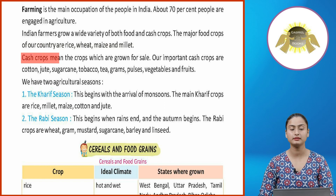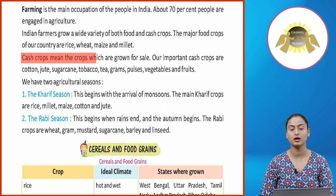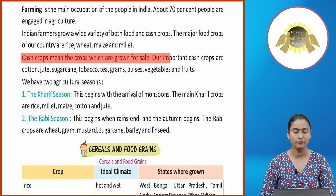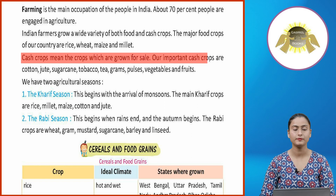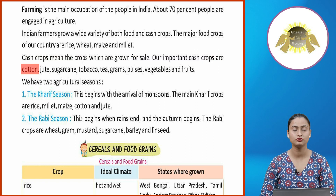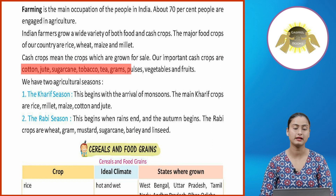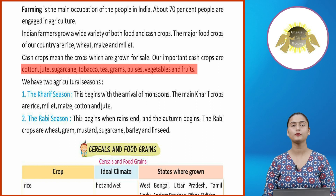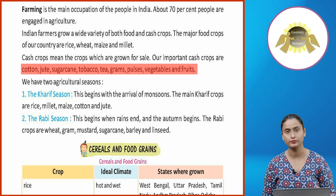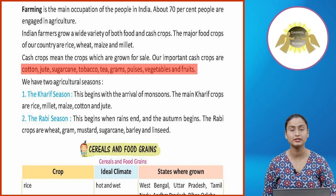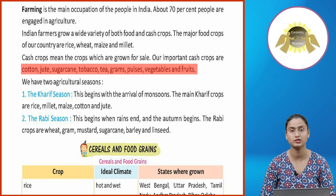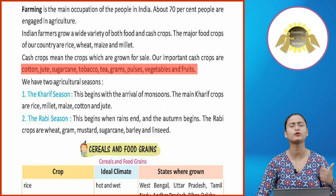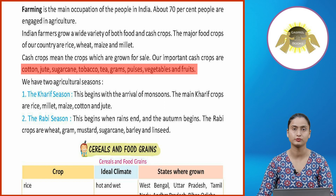Cash crops are the crops which are grown for sale. Our important cash crops are cotton, jute, sugarcane, tobacco, tea, grams, pulses, vegetables and fruits — like tea, coffee, or different types of cash crops.